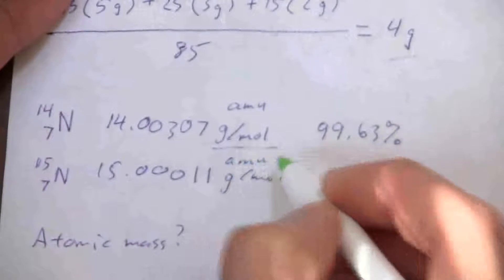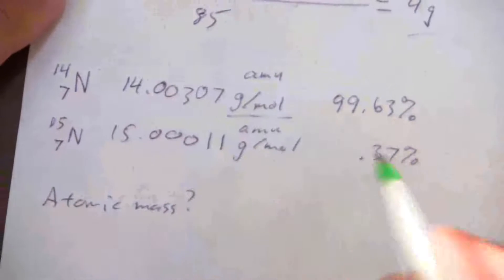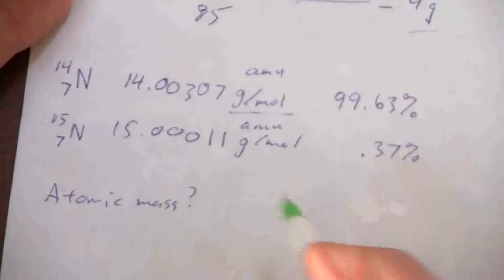And we can look at this either as grams per mole or AMU for our purposes here. It won't make any difference because we're not going to be converting between grams and moles. So we can call that just AMU.